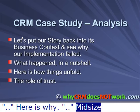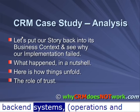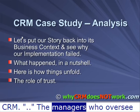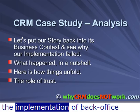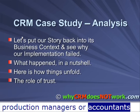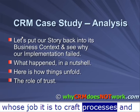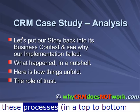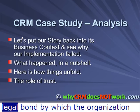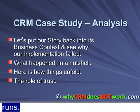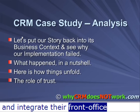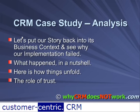Midsize organizations tend to invest in back-end systems, operations, and accounting before they invest in CRM. The managers who oversee the implementation of back-office systems are detail-oriented — production managers or accountants whose job it is to craft processes and conform their employees' activity to these processes in a top-to-bottom fashion. Their procedures are the legal bond by which the organization runs. Companies invest in CRM when they realize that they must better control and integrate their front-office activities to become more customer-centric.